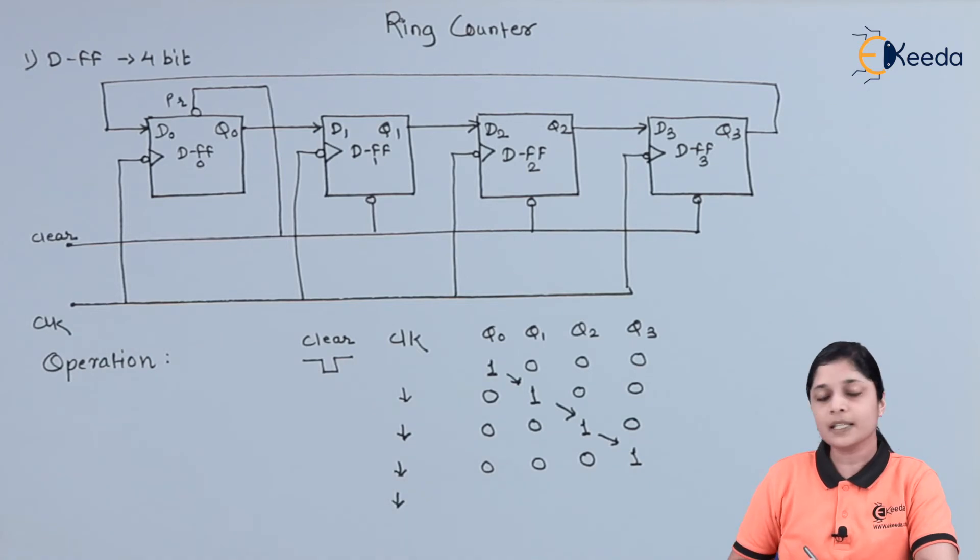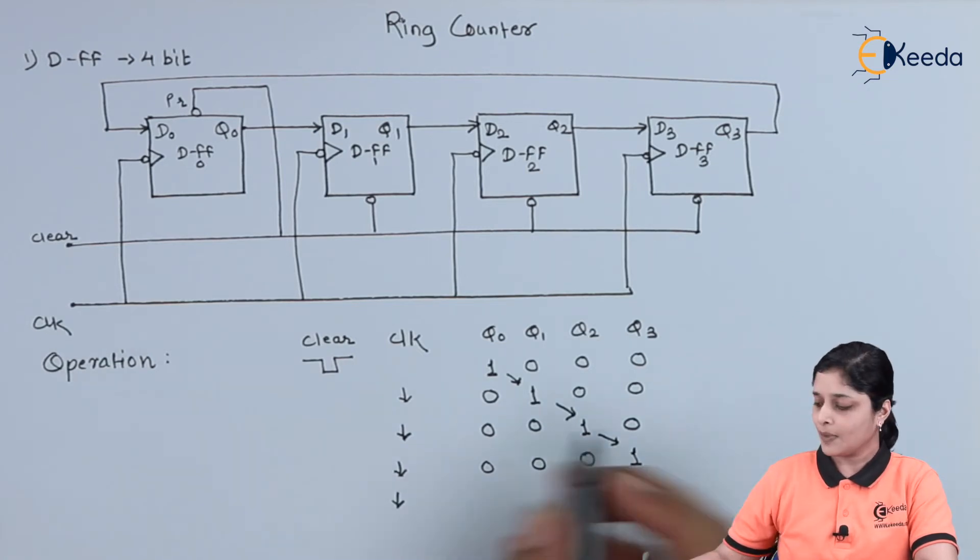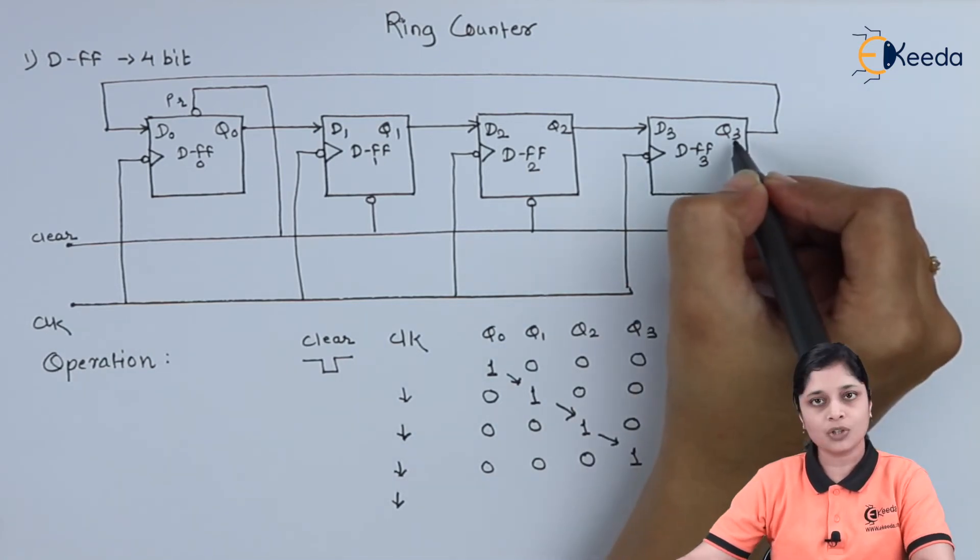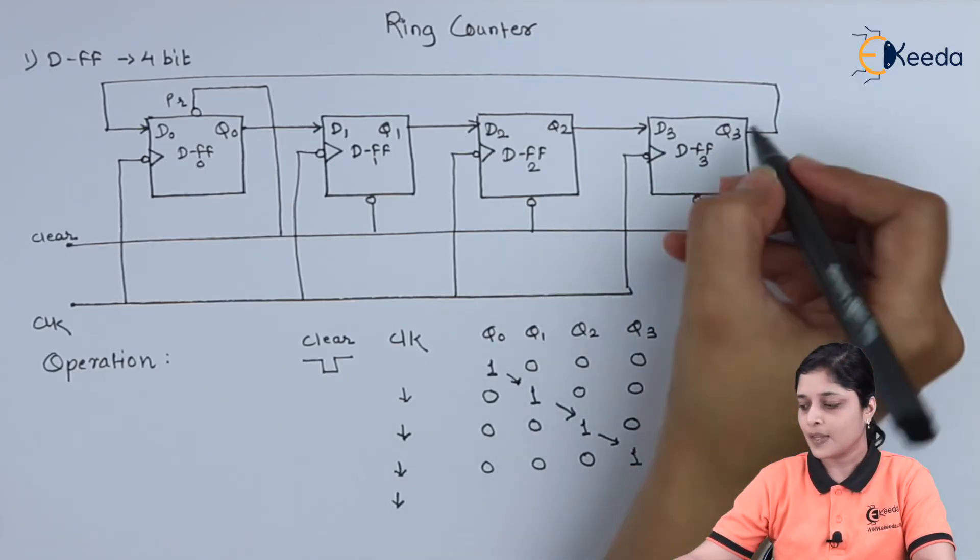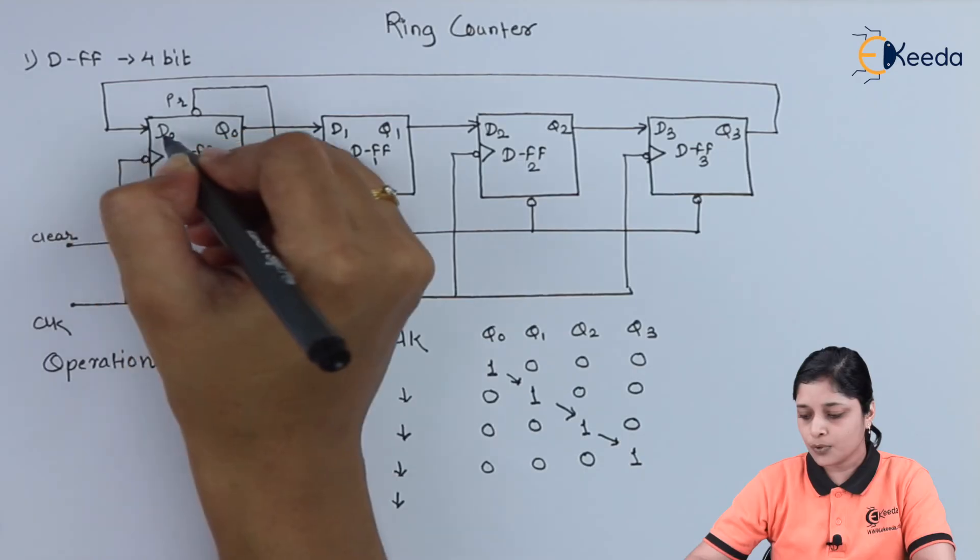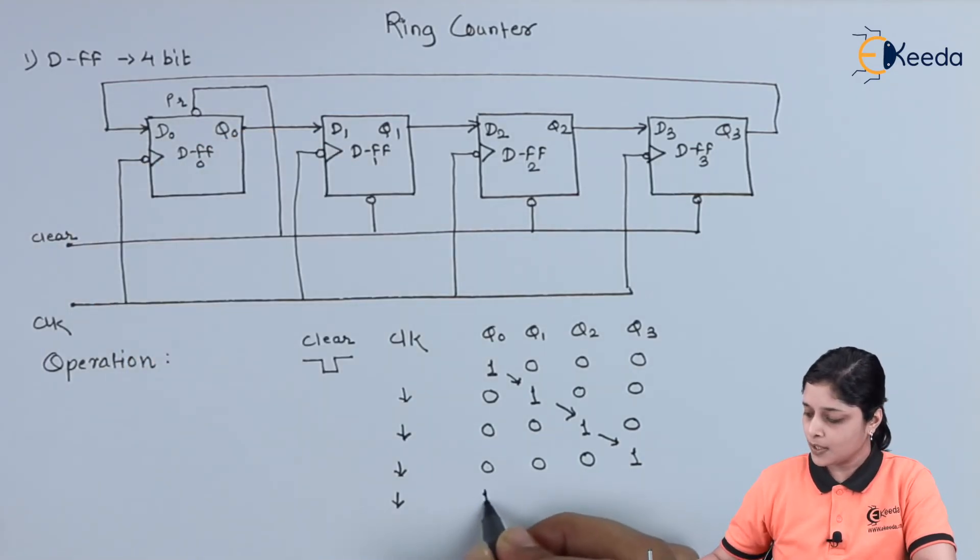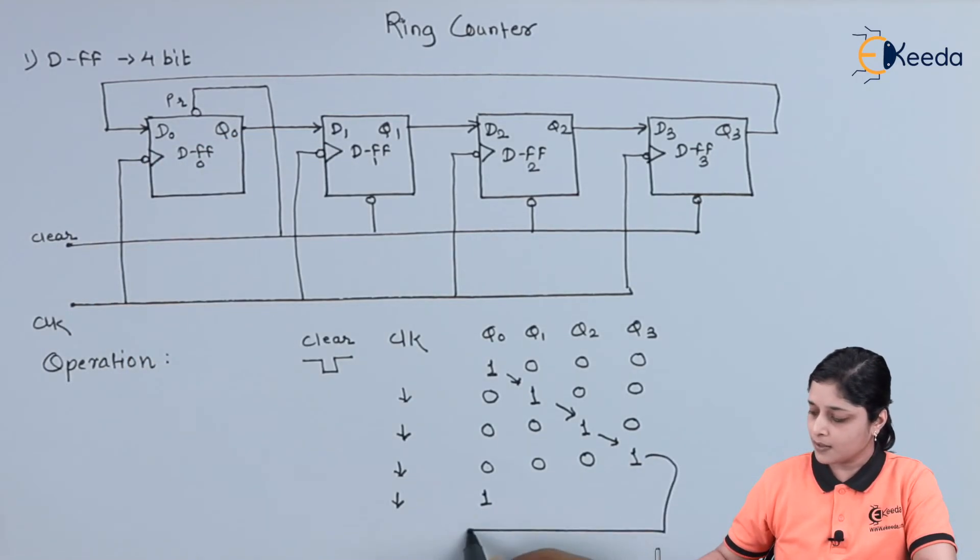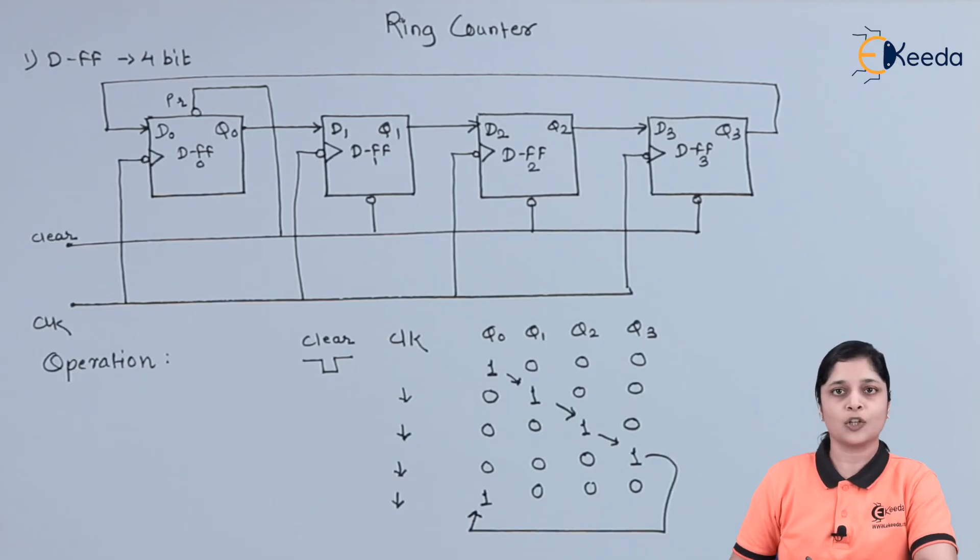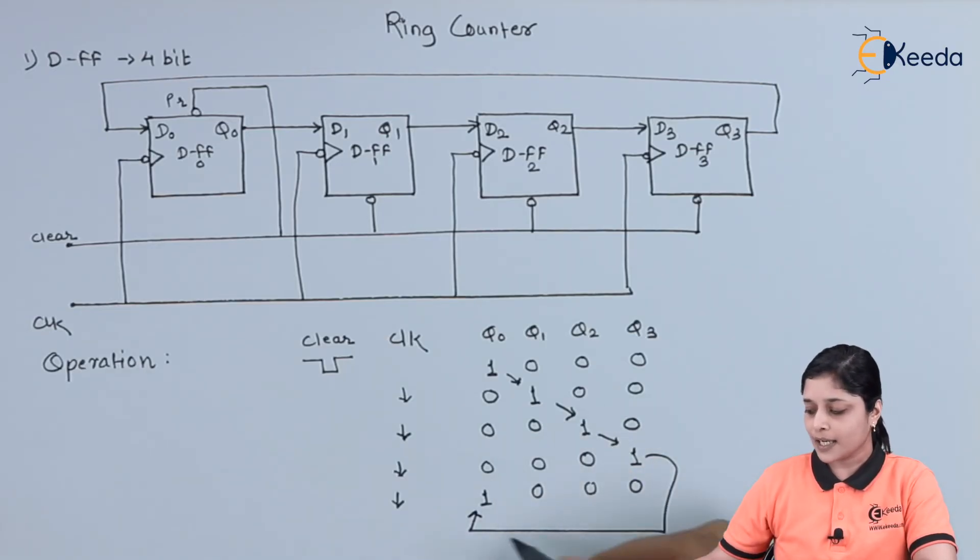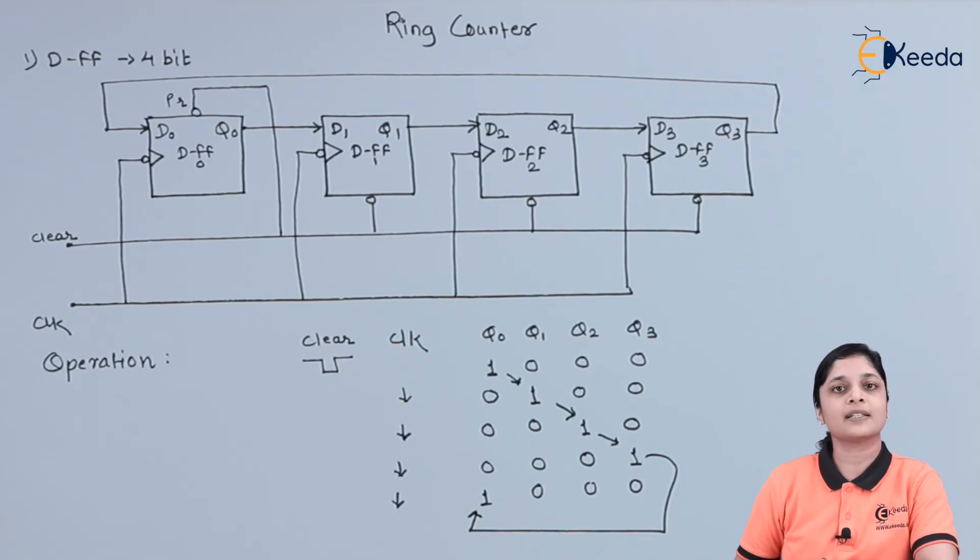If you apply again negative edge-triggered clock, now this Q3, the value of Q3 at this stage is 1. This 1 is the input to first flip-flop. So this 1 comes here. And remaining outputs you can get as 0. As this 1 is again fed to the first flip-flop, that's why this counter is called as the ring counter.